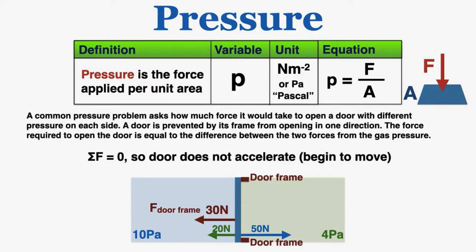A common pressure problem asks how much force it would take to open a door with different pressure on either side. A door is prevented by its frame from opening in one direction. The force required to open the door is equal to the difference between the two forces from the gas pressure. So we can pretend that this barrier is a door. You can see that it has a door frame on one side of it that puts a force on it, preventing it from accelerating to the right. That force perfectly balances out any other forces pushing into it, so altogether the net force is zero, so the door does not accelerate. The door frame is applying this 30 newton force to the left to prevent the door from moving into the frame.